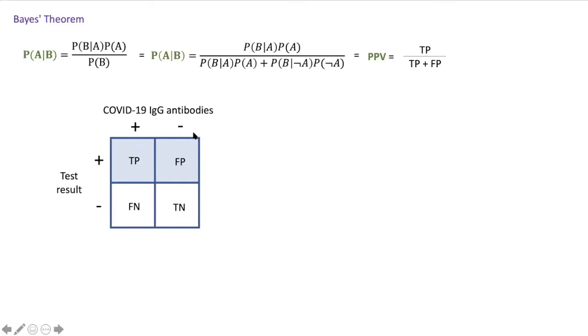And then false positives are people who do not have IgG antibodies but the test incorrectly labels as having them.